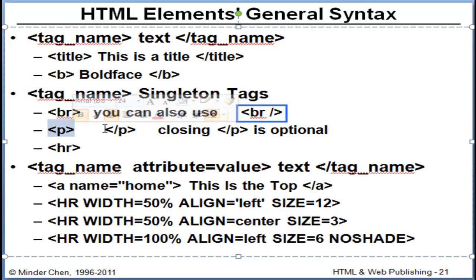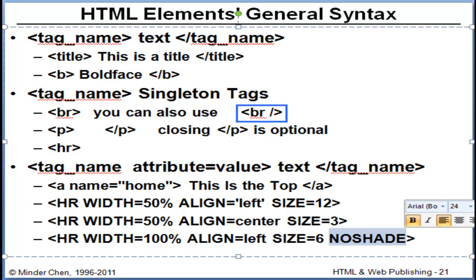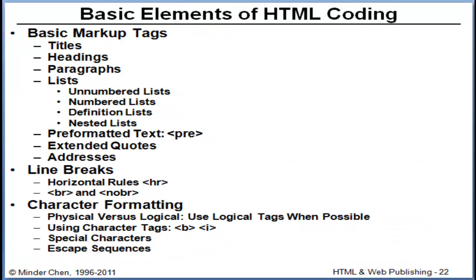The paragraph tag has an ending tag, but it is kind of optional. However, it is a good habit to include the closing tag even when it may be optional. Within the opening tag, you can have multiple attributes and assign values to them. This is shown with the horizontal ruler tag. The value can be a number, a percentage, or sometimes text, and we usually put it in quotation marks. There is also a special case where an attribute does not have a value assigned to it.